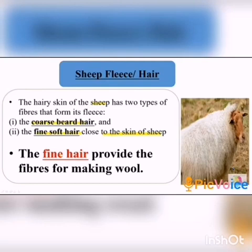The fleece of the sheep has two types. Before knowing those types, let me do one activity. Feel the hair on your body and those on your head. Do you find any difference? Which one seems coarse and which one is soft? Coarse means hard. There are two types of hair — which one is coarse and which one is soft?